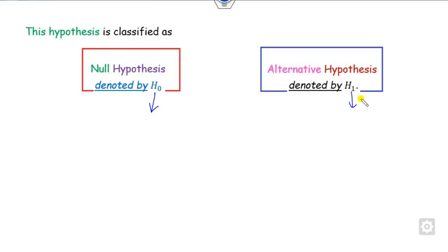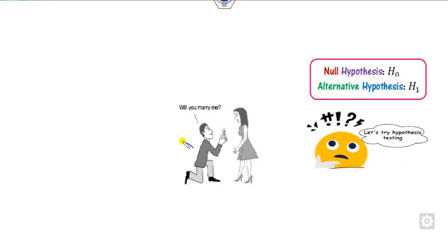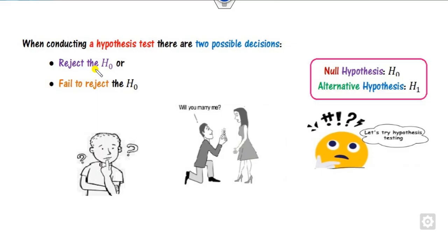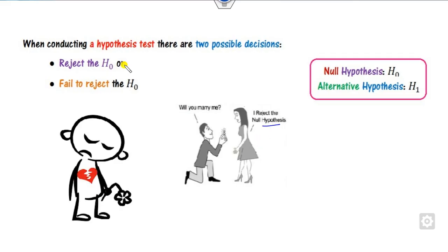What is the meaning of H0 and H1? For example, if a man is trying to propose to a beautiful girl and asks 'Will you marry me?' — what does she think about that? Whether she will reject the proposal of this man, or whether she will fail to reject it. In the meantime, the man will always try to convince himself, or he is on the confusing side whether she will accept or reject his proposal. So if she rejects the null hypothesis H0, then this person will break his heart.